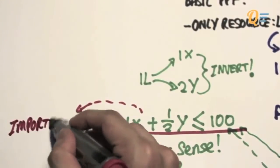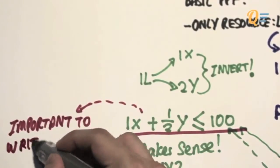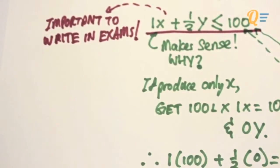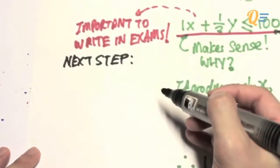This equation over here is very important. You have to write this down in your exam. Every time you encounter a question that relates to the production possibility frontier, you have to write that.